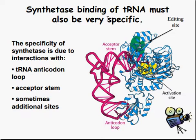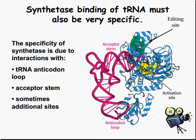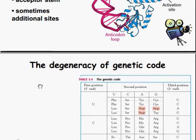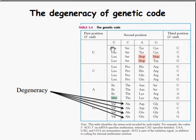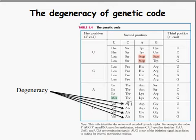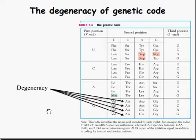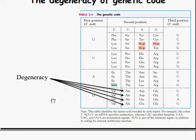The synthetase binding of the tRNA must also be very specific. The specificity of the synthetase is due to interactions with the tRNA anticodon loop and the acceptor stem, and sometimes there are additional sites. This is a good point to mention the degeneracy of genetic coding — different sequences like GCU, GCC, GCA, GCG all code for the same alanine amino acid. This helps prevent problems within the coding itself.